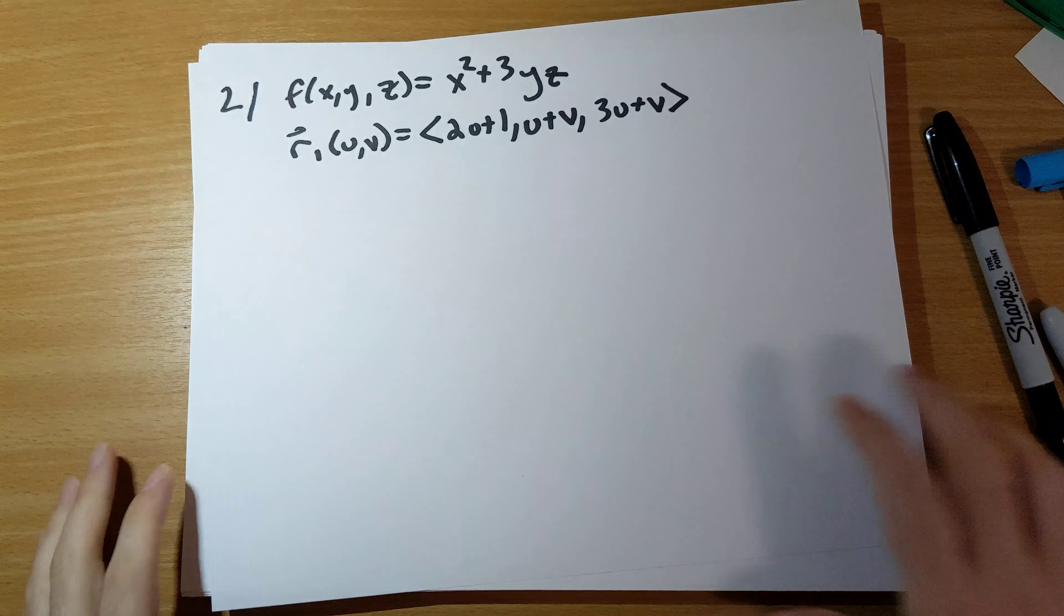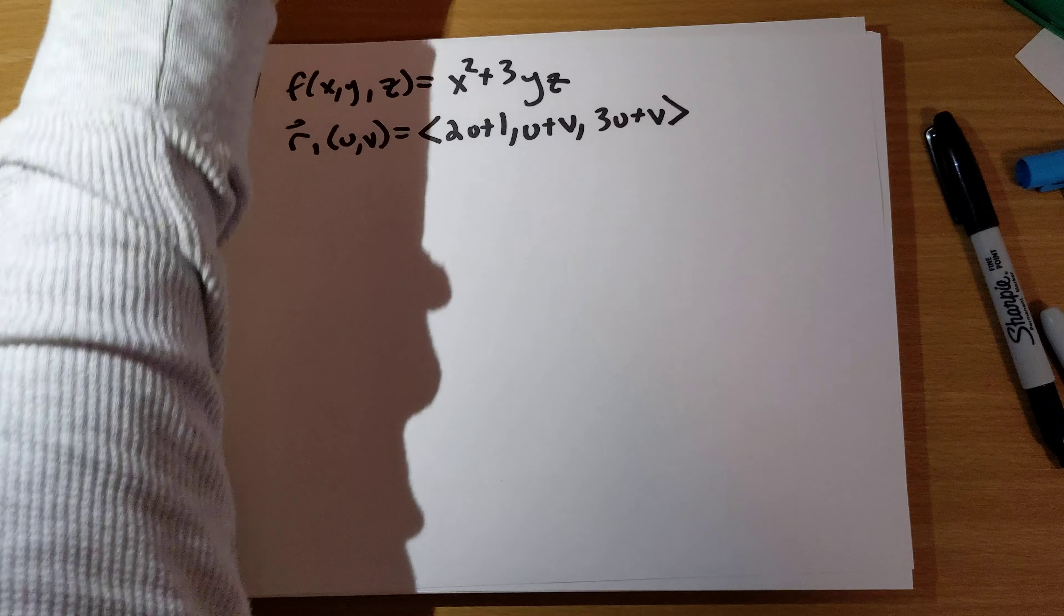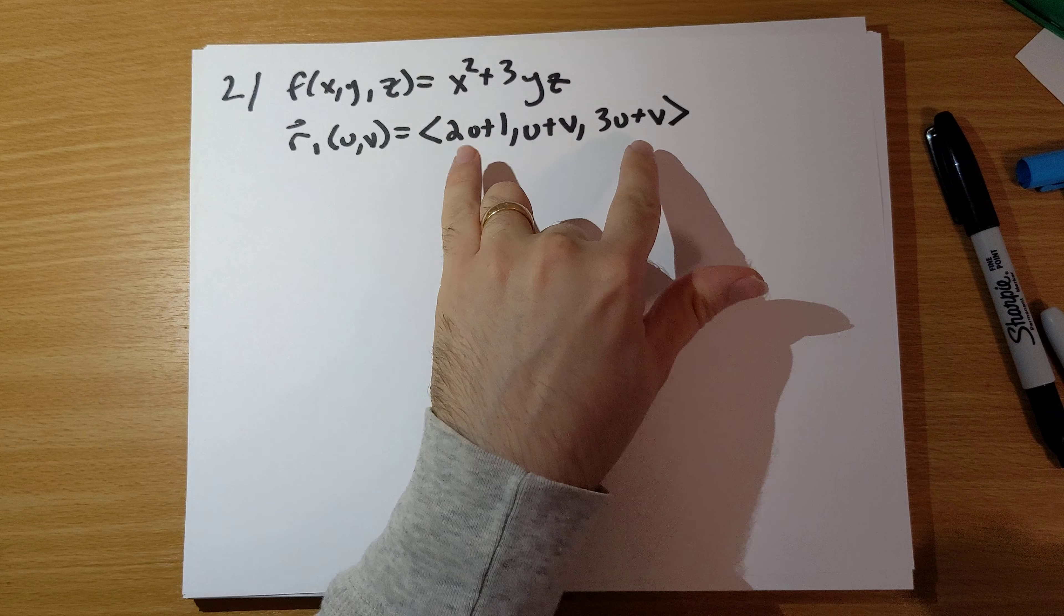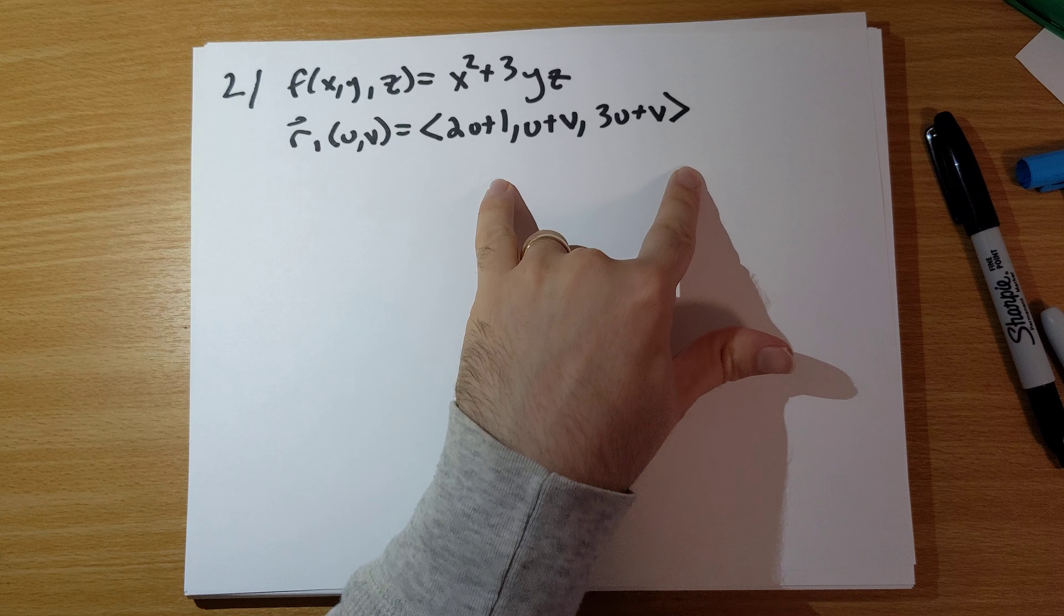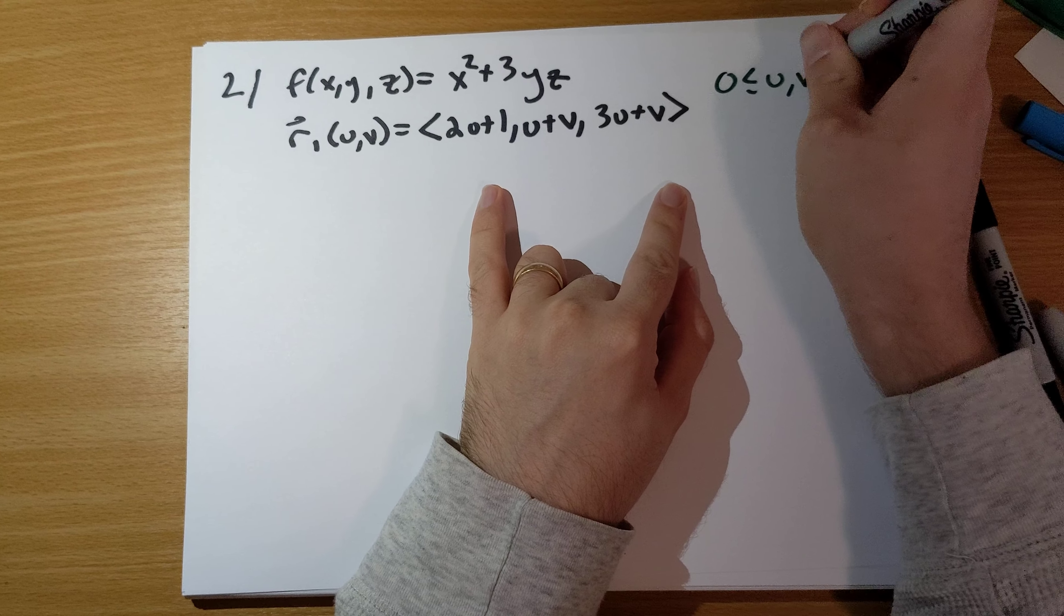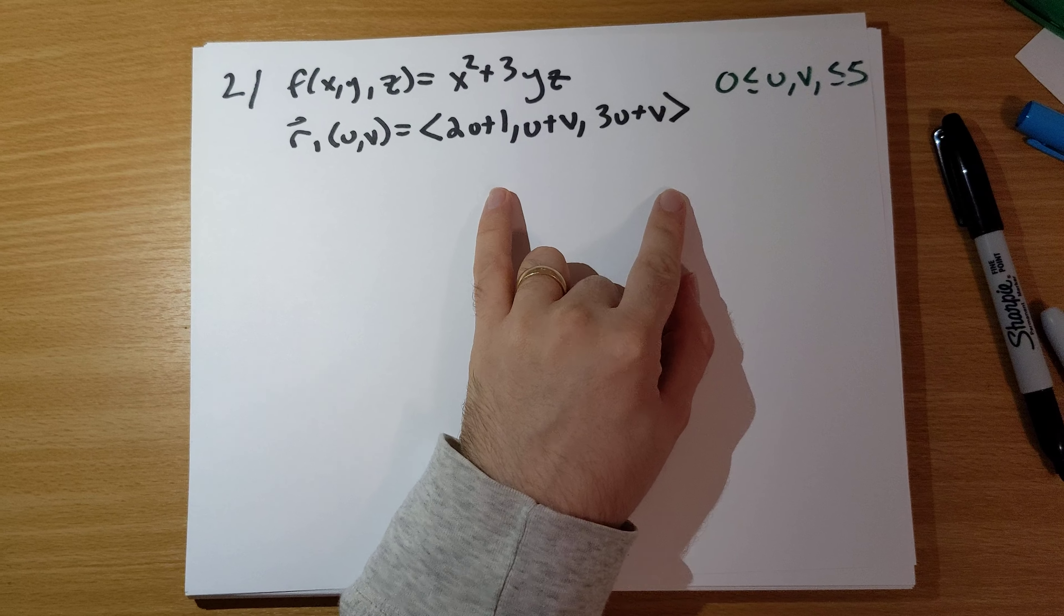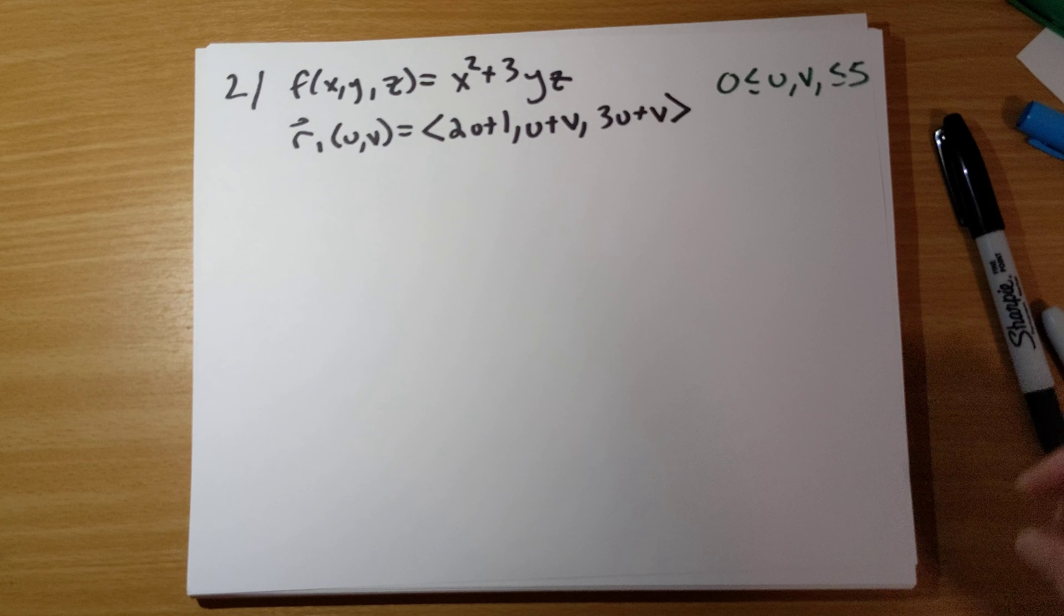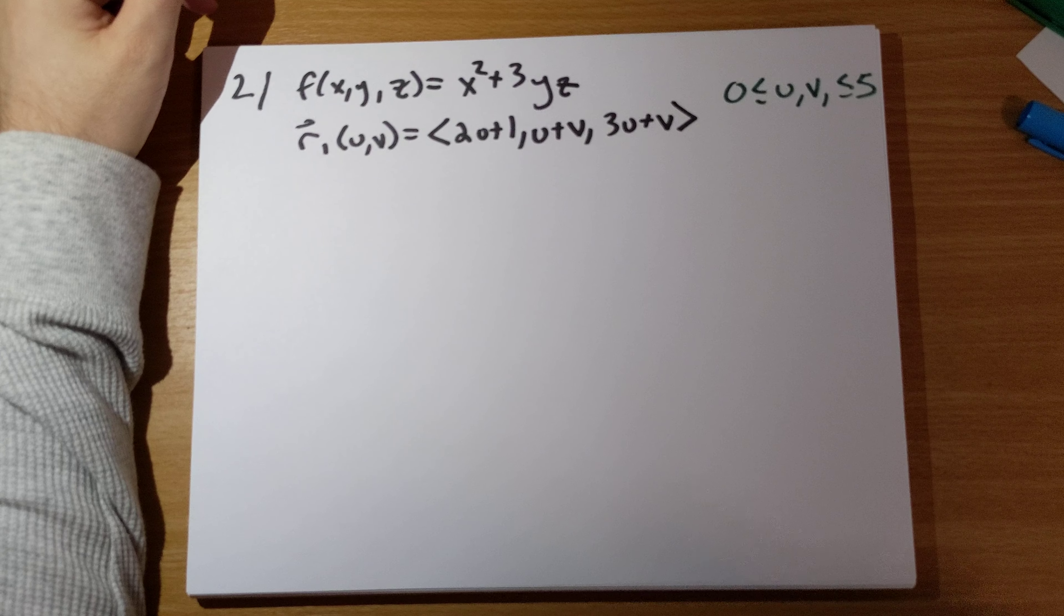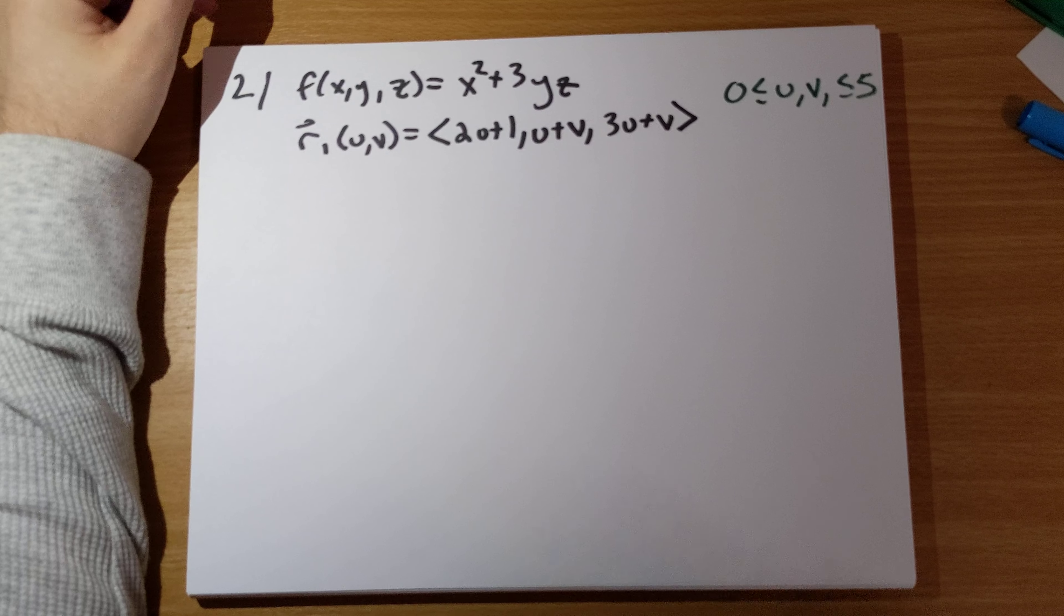Integrate f of x, y, z is x squared plus 3y, z over the surface that has this parametrization here where u and v are both between 0 and 5. How do we do this? We are going to have to do the following steps.